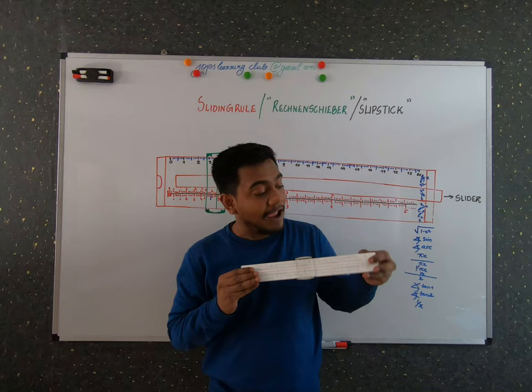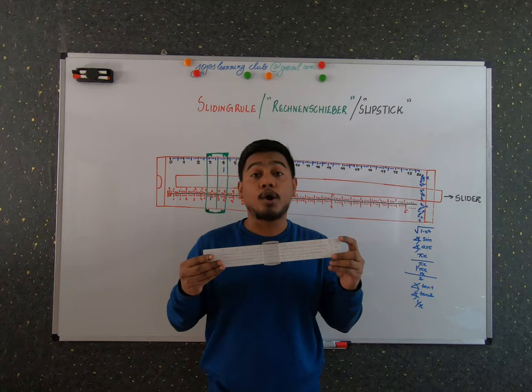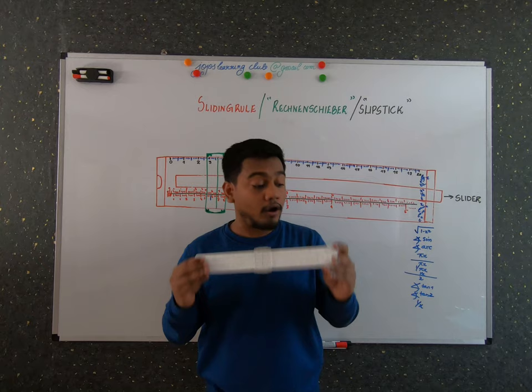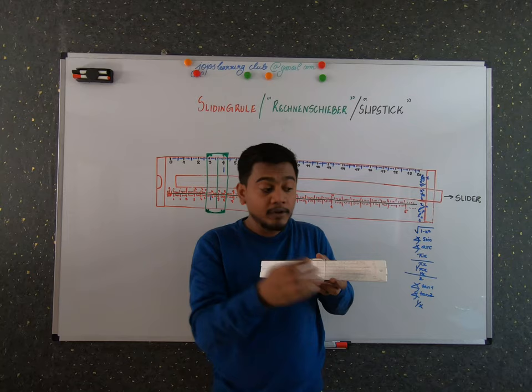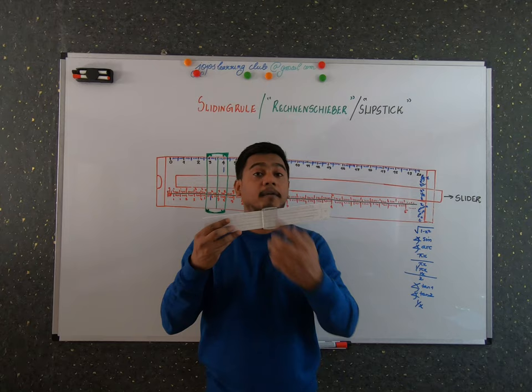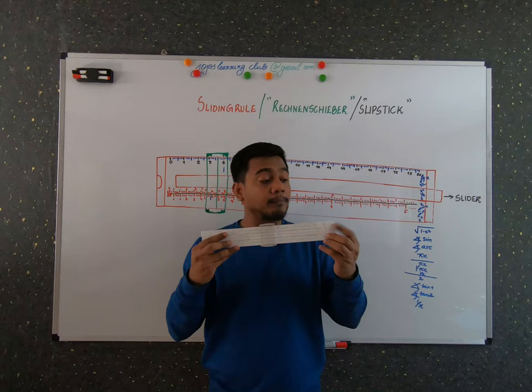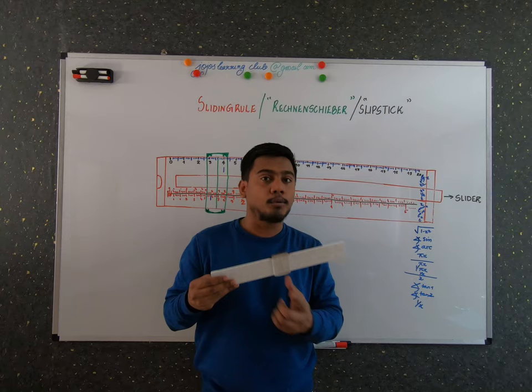For example, there is an x scale. If you want to get the value of log x, you keep the value of x at position 10, and from the log x scale above you can calculate the value of log 10. Or if you keep x at 2, then from the x² scale just above it you can see the value of 2 squared. Similarly, from the x³ scale, you can get the value of 2 cubed.